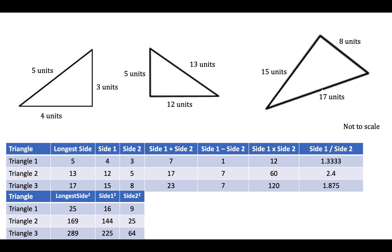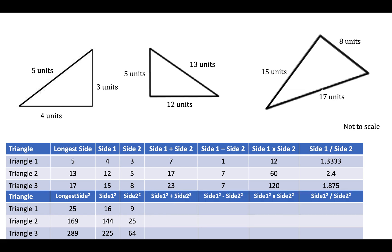Maybe if we add, subtract, multiply, and divide the squares we might find the relationship. For the first one, if we add the squares of the two shorter sides we're going to get 25. If we subtract them we get 7, multiplying gives us 144, and dividing gives us 1.7 recurring.